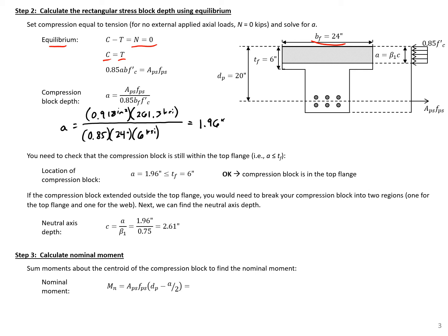We need to check to make sure that this compression block falls within our top flange because we have a T-section. So we need to check that A is less than the thickness of our flange, which is 6 inches. Since 1.96 is less than 6, we know that our compression block is in the top flange, so we're okay. We can next calculate our C by taking A divided by beta 1, giving us a C of 2.61 inches, which we'll need later in this example.